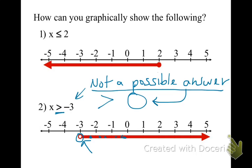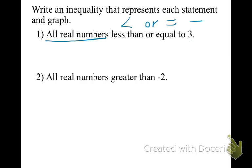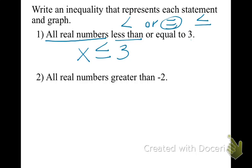In your notes I need the directions as well as example number one. Example number one is telling us we're looking for all real numbers less than or equal to 3. How can I rewrite that? I can rewrite it using a less than or equal to sign. All real numbers — I don't know what those numbers are, so let's use a variable. All real numbers: let's call them x, and x is less than or equal to 3. And I've written my inequality.